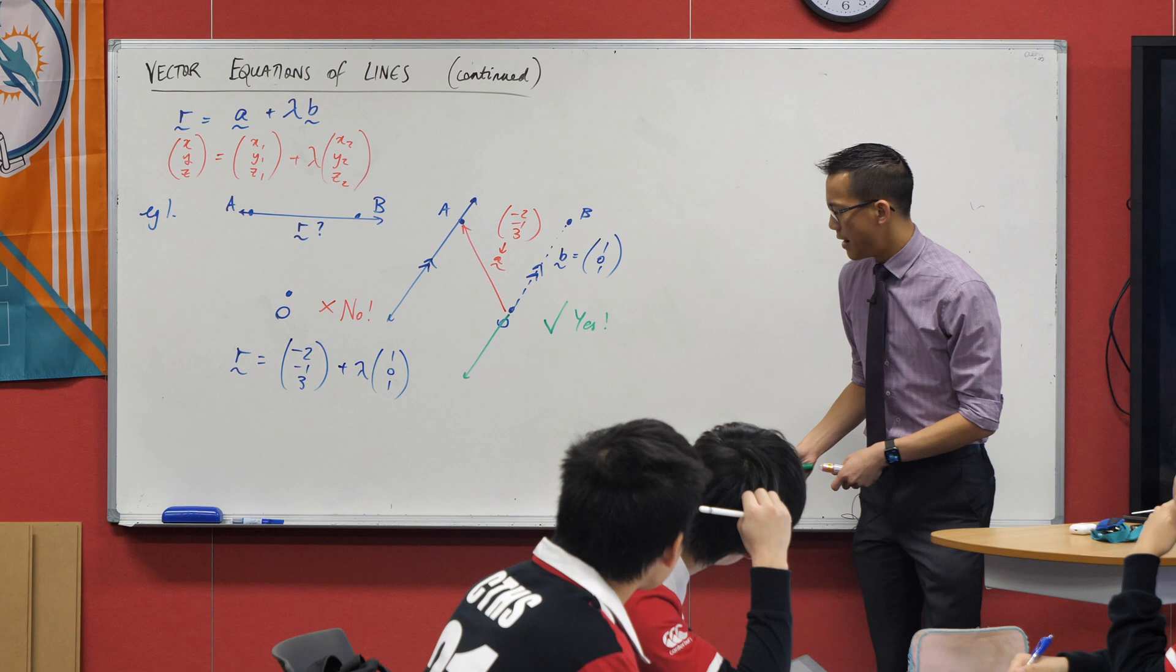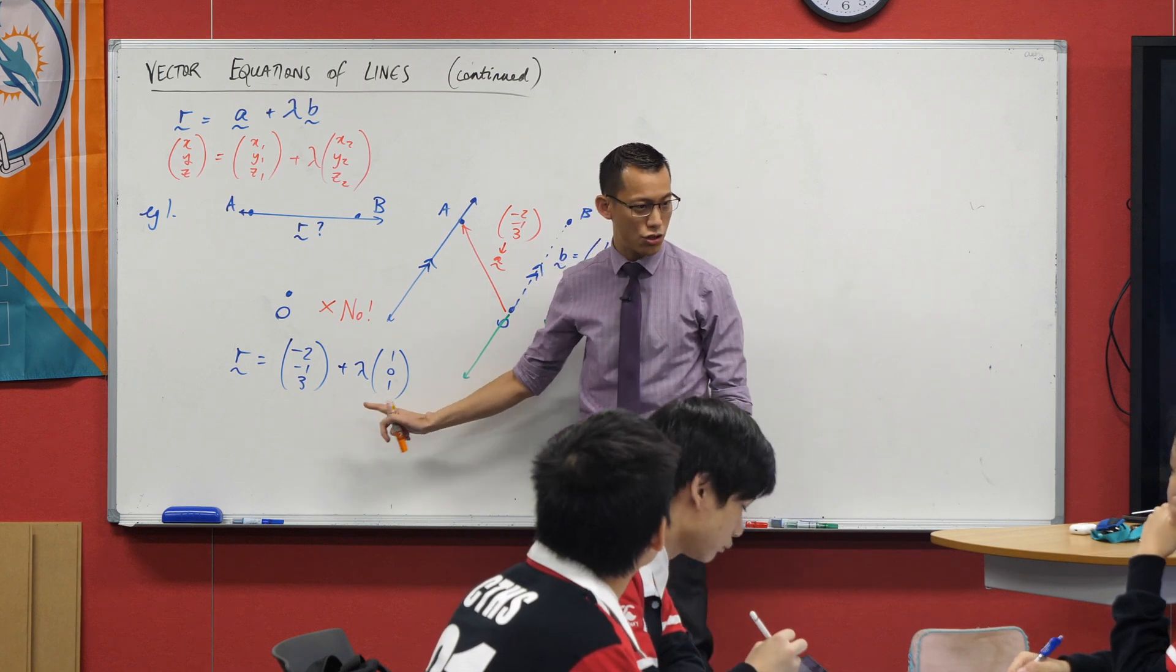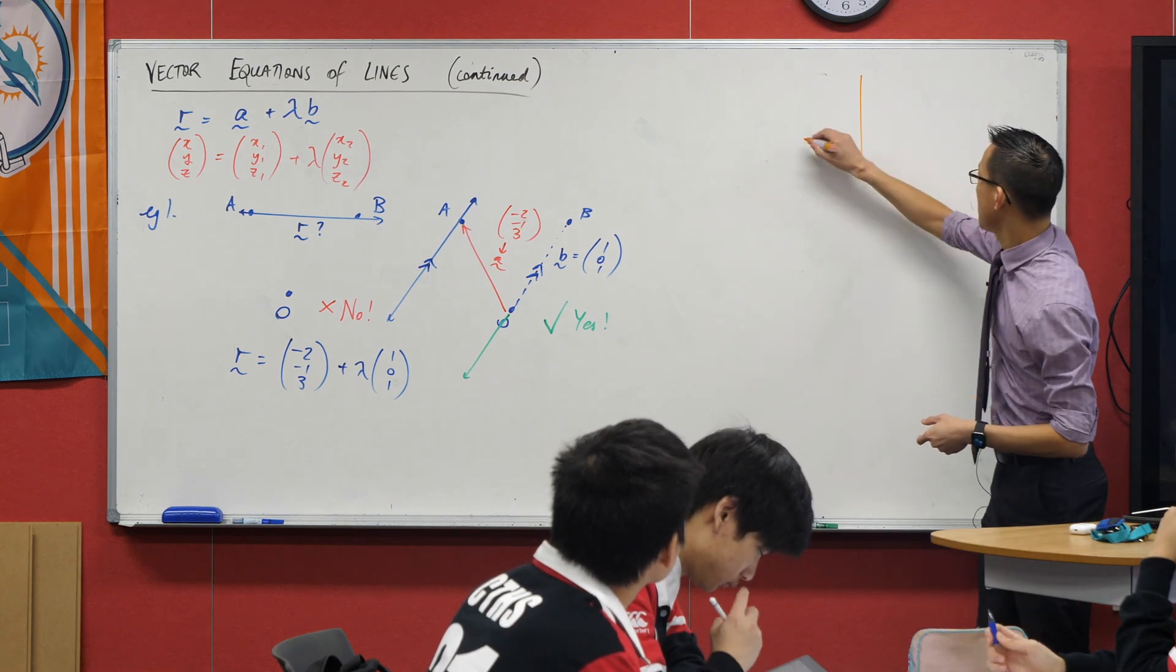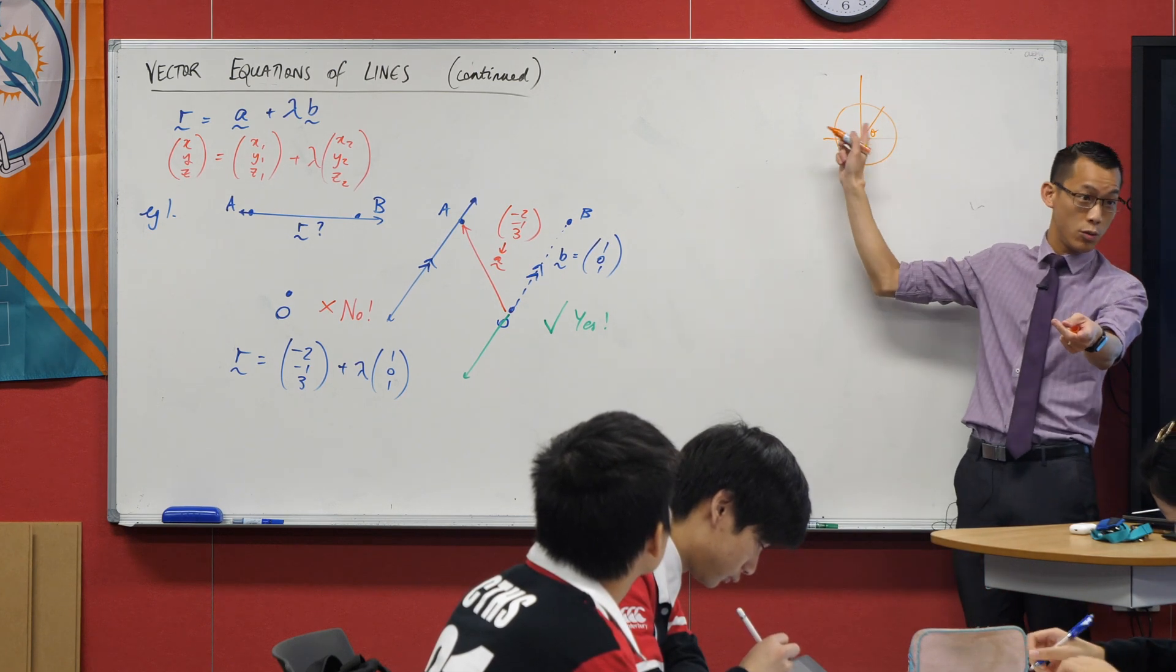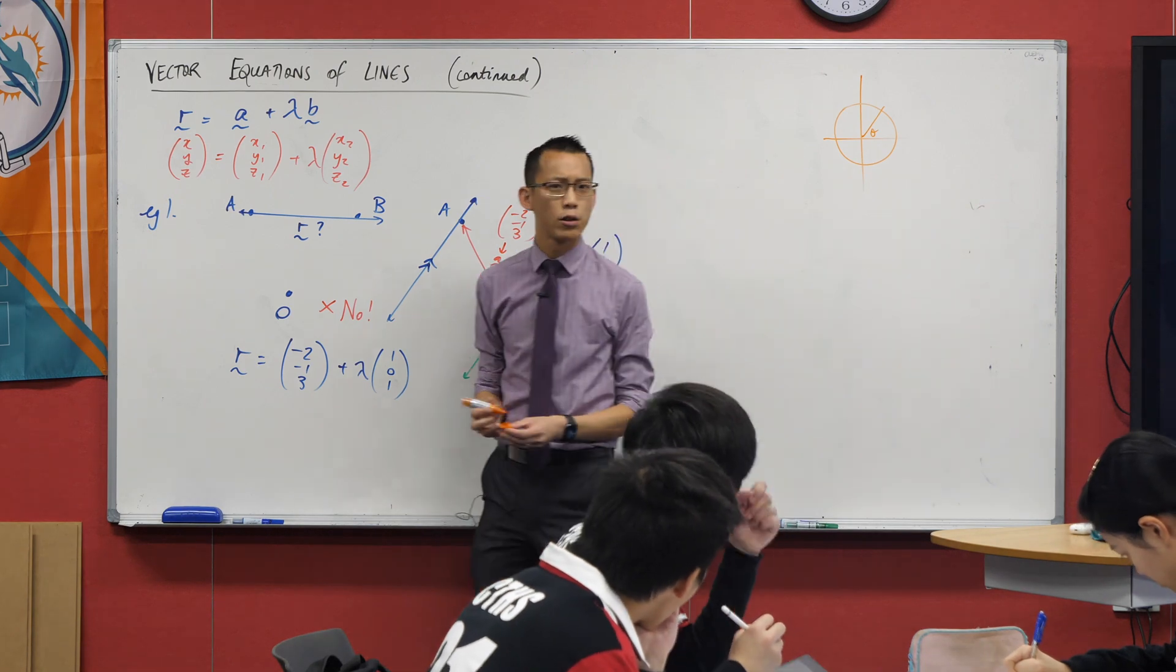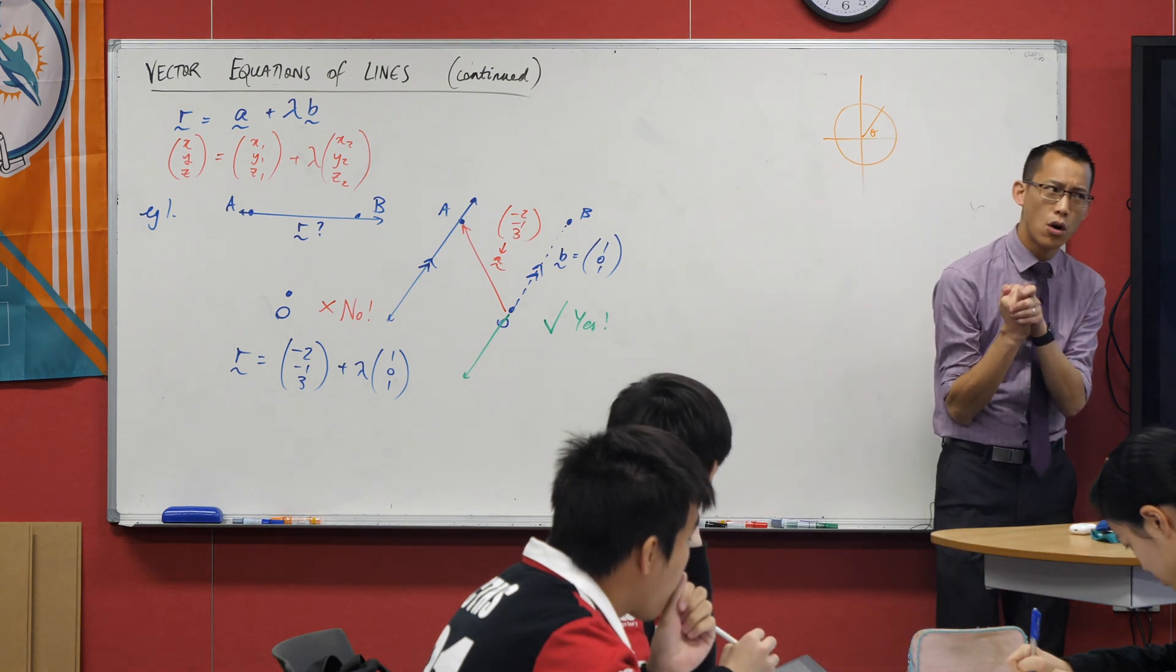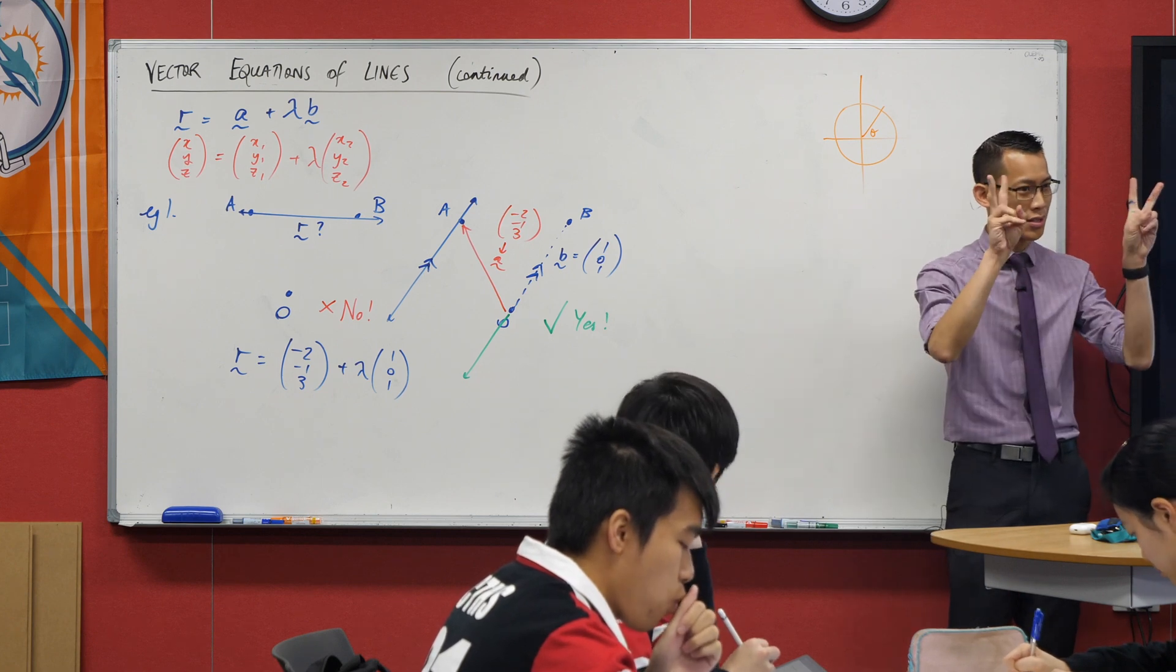Remember we introduced this idea that lambda is our parameter. As you change lambda, you move along this line. Every point on this line can be described by a single value of lambda, just like any point on the unit circle can be described by some appropriate choice of theta. You tell me the lambda, I'll tell you where you are on this line. Keep that in mind when you look at the second part of the question.